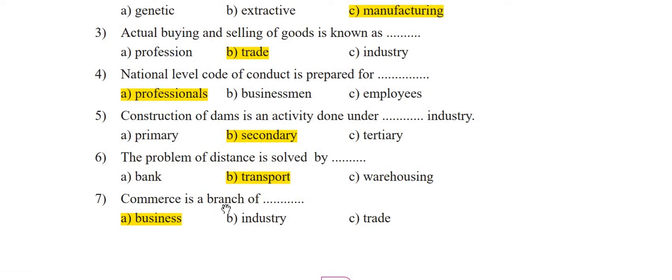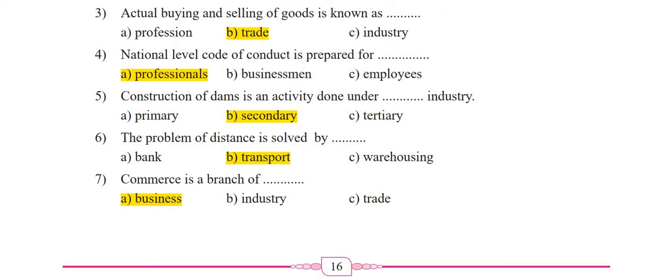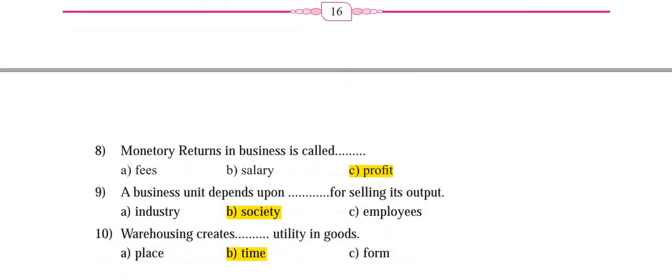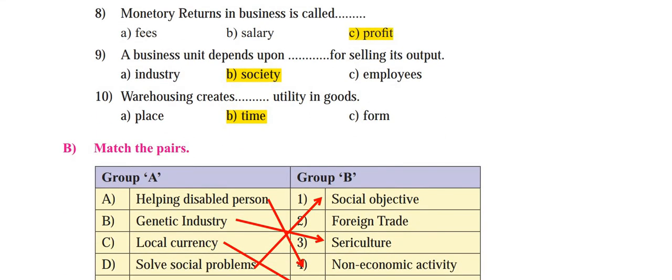Seventh: 'Commerce is a branch of ___.' As we saw when we distinguished between business and commerce, commerce is clearly a branch of business. The correct answer is A — business. Eighth: 'Monetary returns in business is called ___.' The monetary return you get in business is called profit. The correct answer is C — profit.